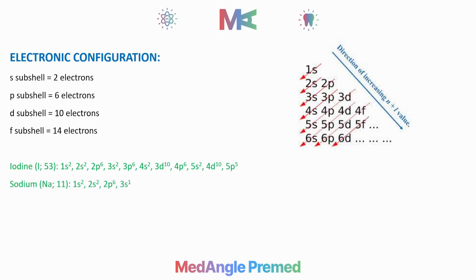We have Sodium. Sodium has atomic number 11, which means total 11 electrons, because atomic number equals number of protons, and in a neutral atom, number of protons equals number of electrons. Sodium's electronic configuration is 1s², 2s², 2p⁶, 3s¹. This is not our answer.